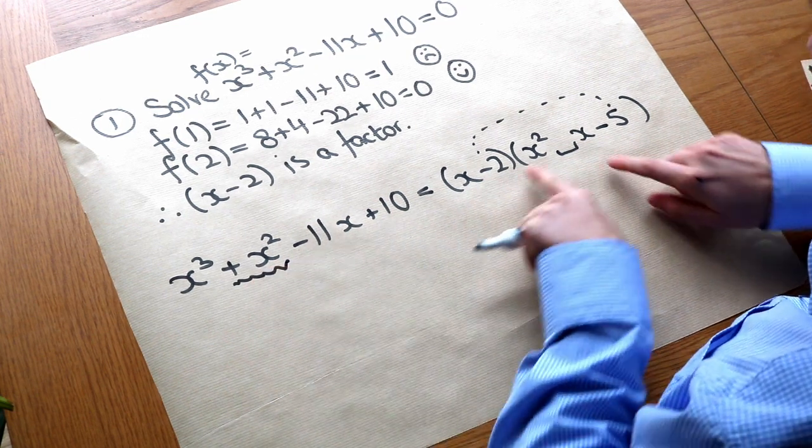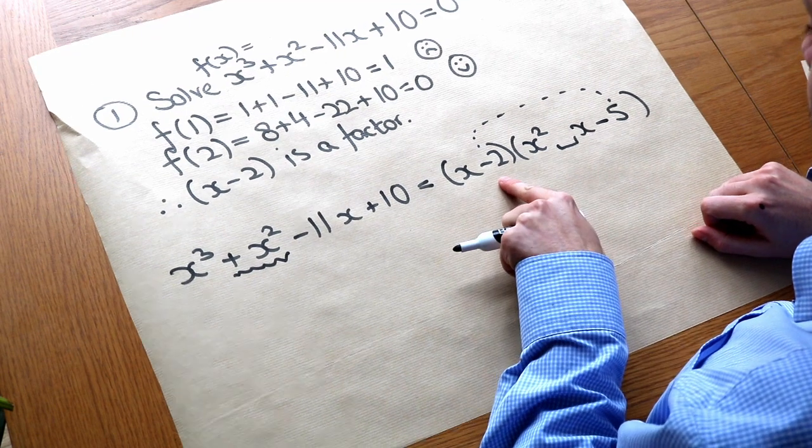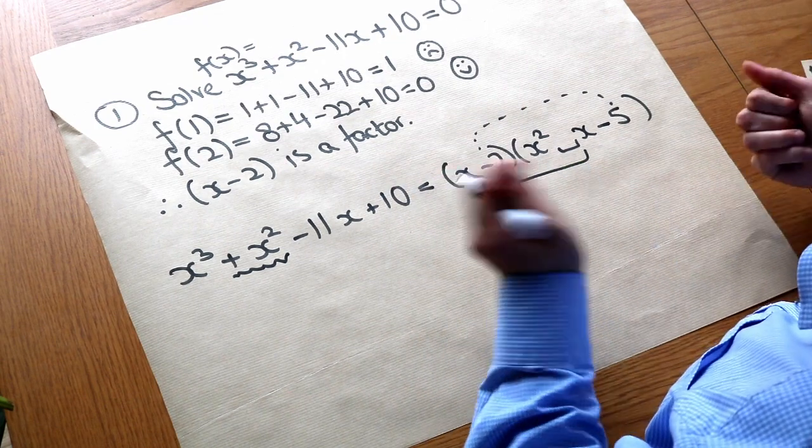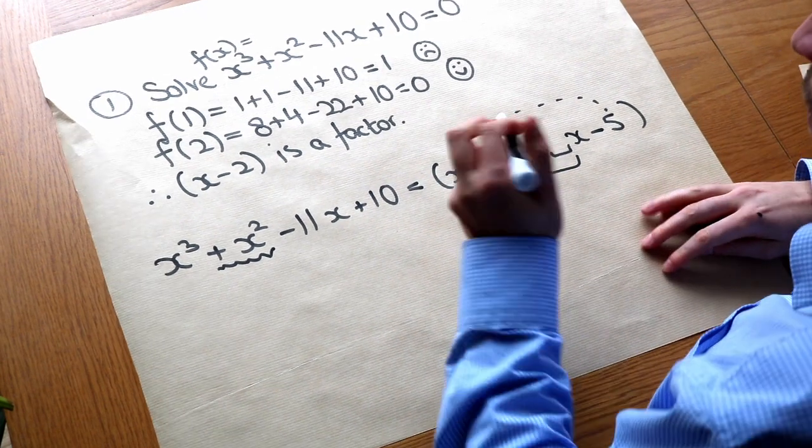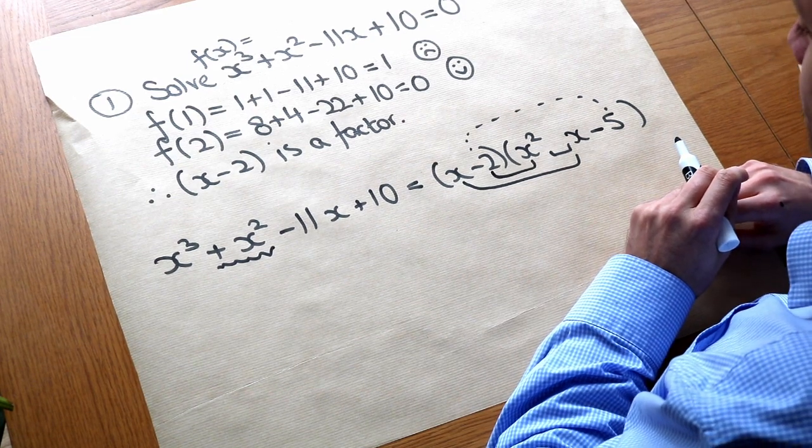Well where are we going to get an x squared term from in this expansion? Well it could be the x times this mystery x term here would give us an x squared term, whatever that is. And also the minus two times the x squared would also give you an x squared term.